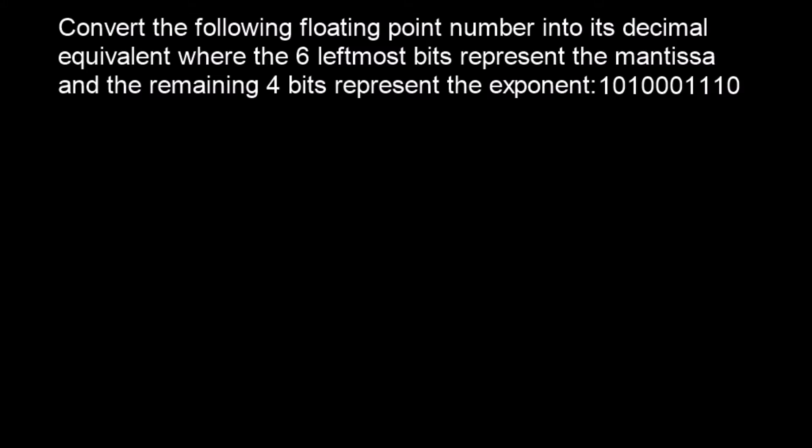We're going to look at an example where we have a negative mantissa and a negative exponent. Let's write down the mantissa and exponent separately: we've got 101000 for the mantissa and 1110 for the exponent. Because both those numbers have a leading one, we know that they're negative.